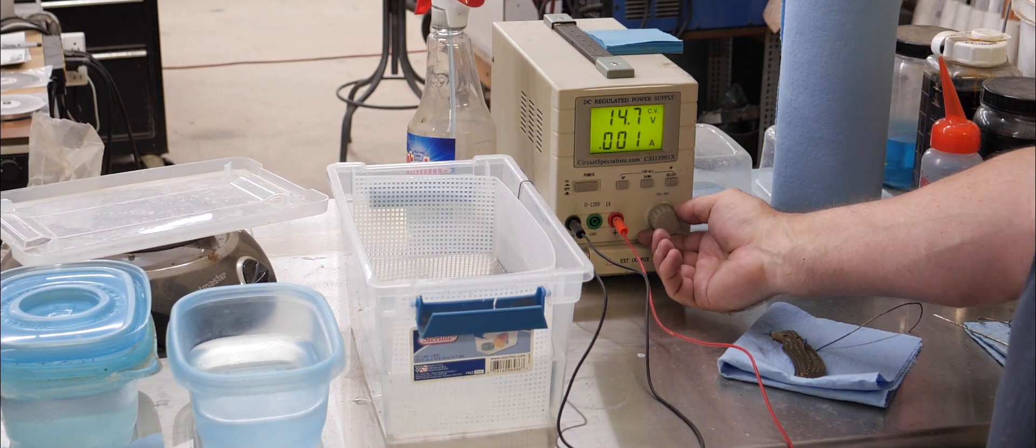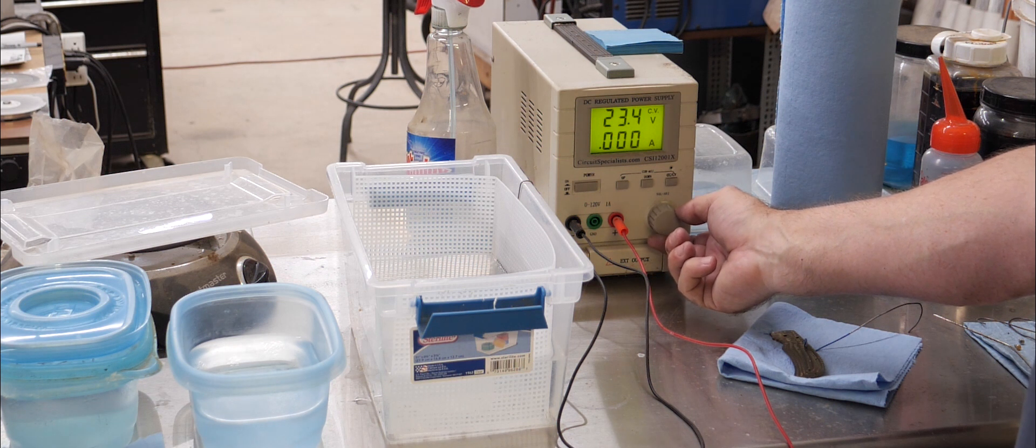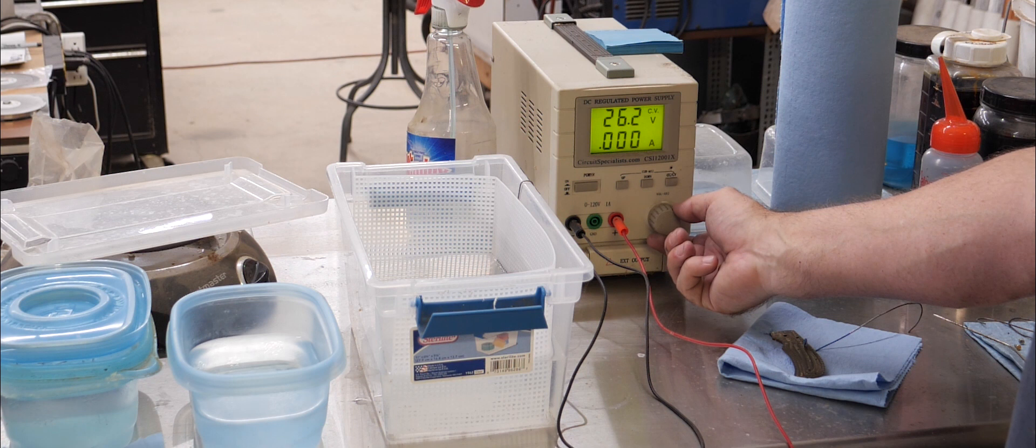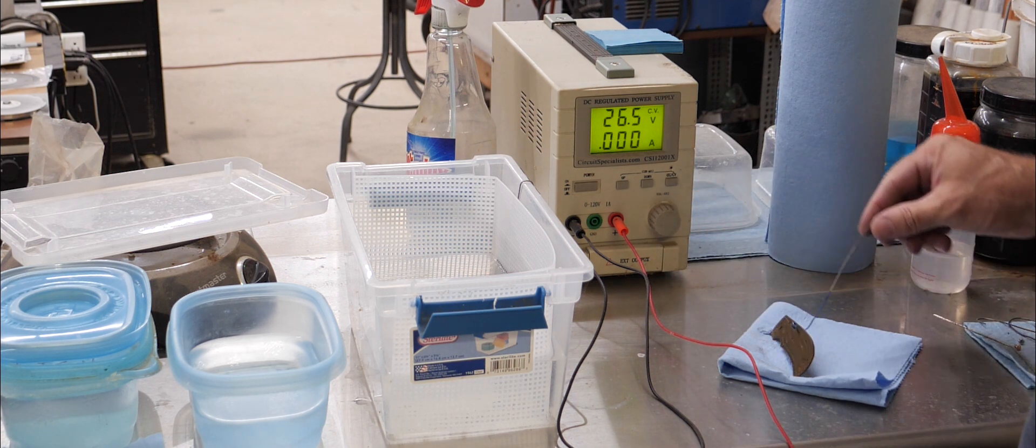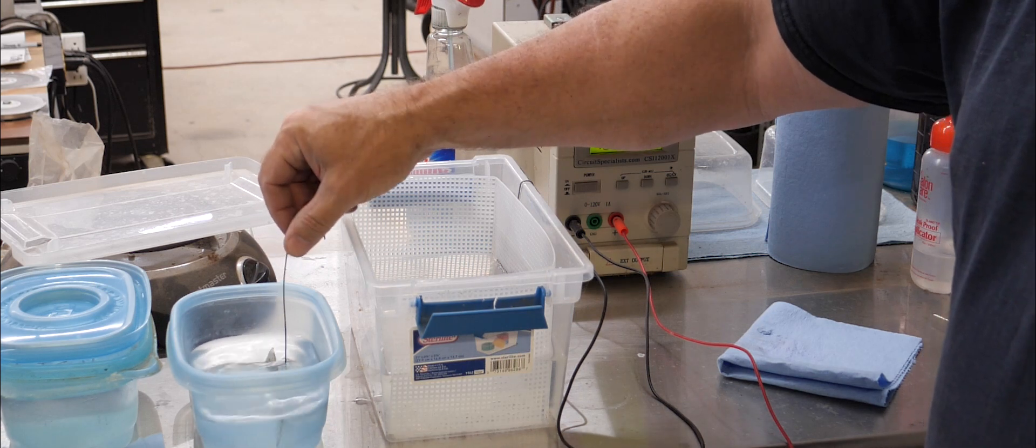One of the things that's really interesting about anodizing titanium is that you can increase the voltage and re-anodize, so I can change the color. I've got this bronze and now I'm going to go to a blue. So 26.5 volts is where I get the nicest blue. The process is exactly the same.